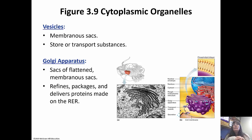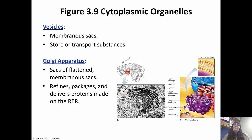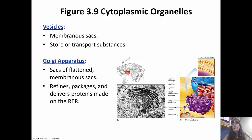Vesicles are membranous sacs that either store or transport substances. The Golgi apparatus is a series of flattened sacs — basically they're like the post office. They refine, package, and deliver proteins made on the rough endoplasmic reticulum. You take your package to the post office, they make sure it's in the correct box with the right postage, and they make sure it gets where it needs to go — that's what the Golgi apparatus does.